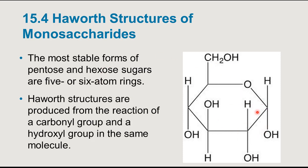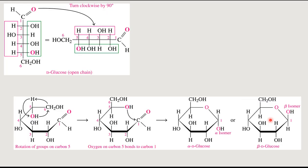The Haworth structure of a monosaccharide is actually considered a hemiacetal of the sugar. We have the carbonyl functional group and the hydroxyl coming off of the same carbon — what was the carbonyl is now a reduced carbon-oxygen single bond.